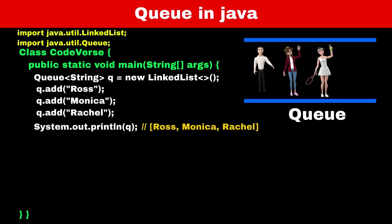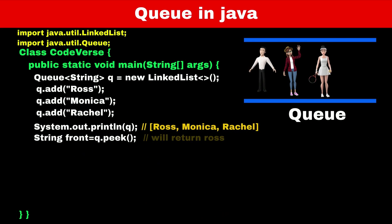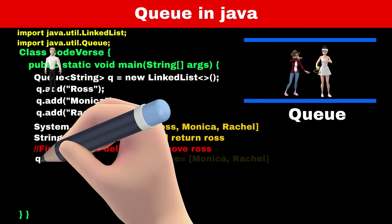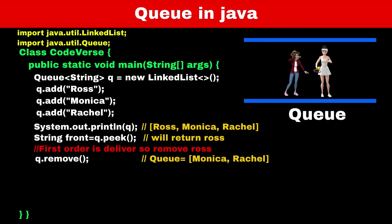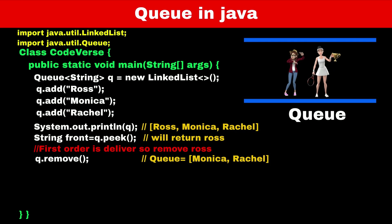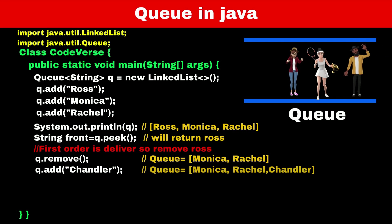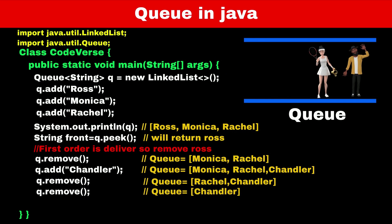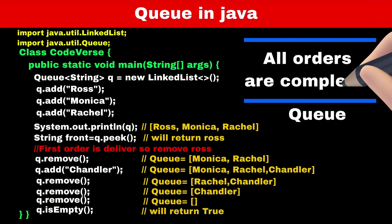If you print the queue, Ross is at the front — you can also use the peek function to check who is at the front. Suppose the first pizza is ready, so we deliver it to Ross and remove him using the remove function. Monica is now at the front. If Chandler places an order, we add him to the queue. When the second pizza is ready, we deliver it to Monica and remove her. Similarly Rachel gets the third pizza, then Chandler gets the fourth. Now the queue is empty, meaning all orders have been delivered.